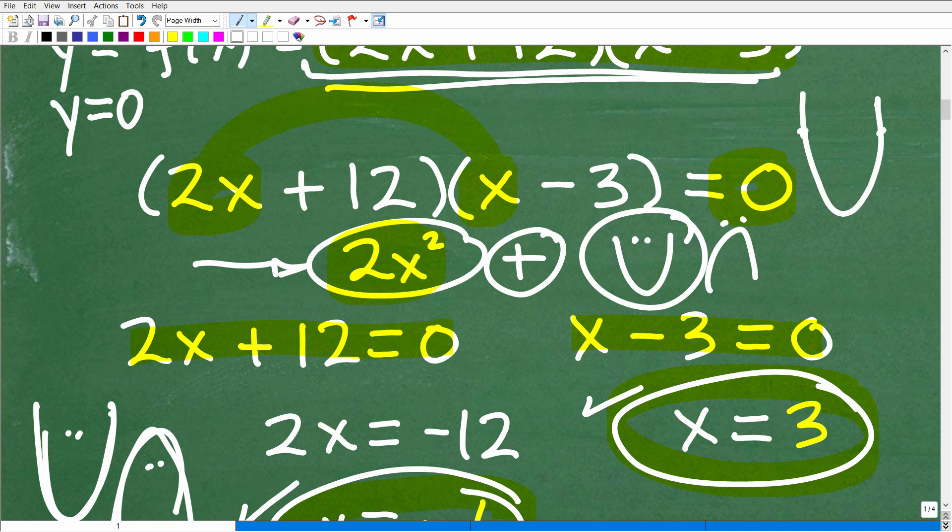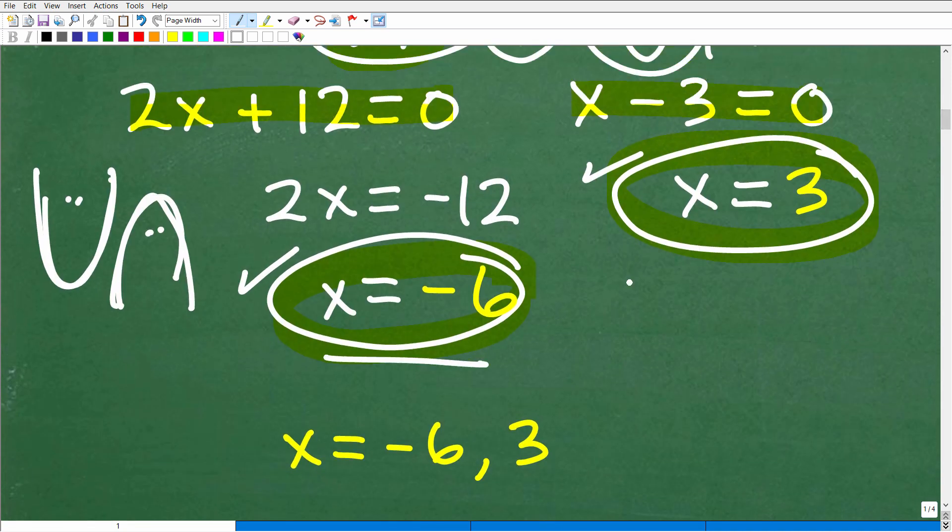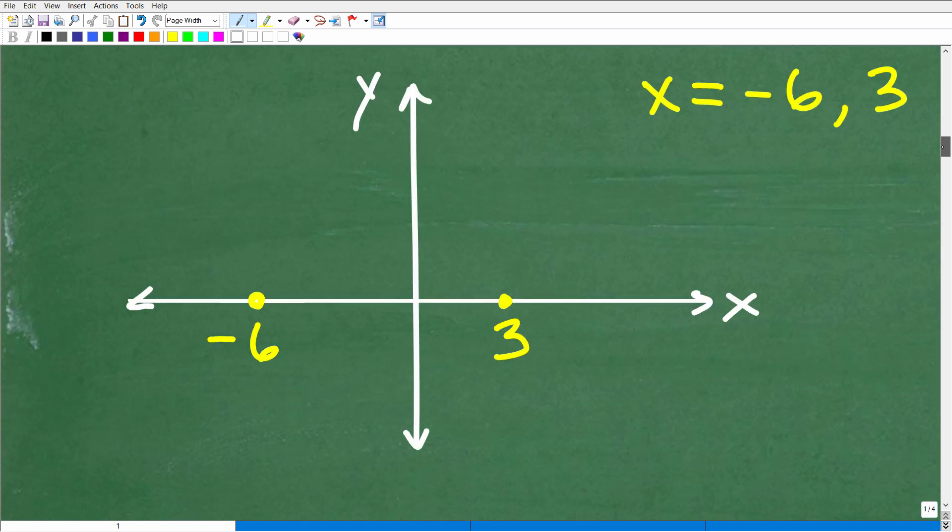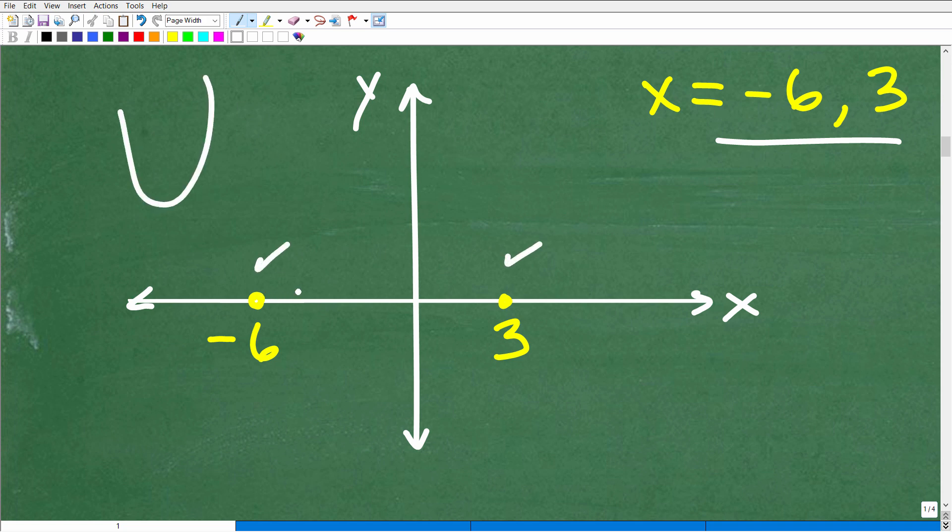So it's going to have this shape, and it's going to cross through our x-intercepts, our zeros, our roots, our solutions to this quadratic equation. So that right there is enough to actually come up with a quick sketch. But here's the deal, right? We can do one other thing to kind of spruce up our sketch here.